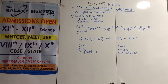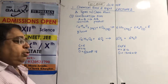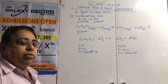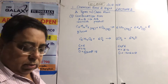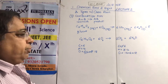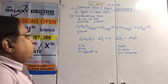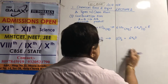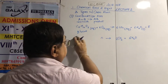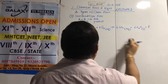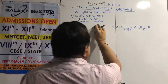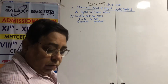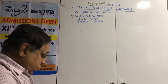Reactants and products must have the same number of individual atoms — matter should not disappear. This is the law of conservation of mass. Also, the reverse of this respiration equation gives you photosynthesis — a very important equation for the board exam.